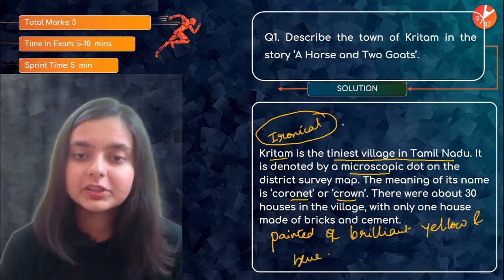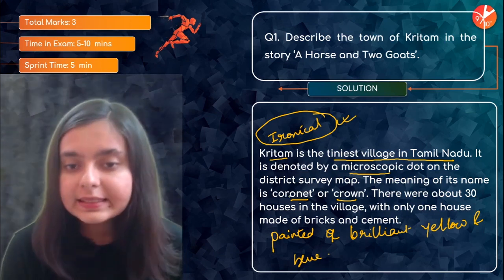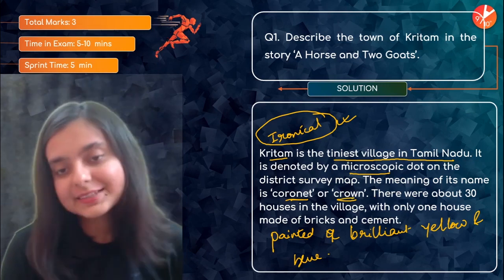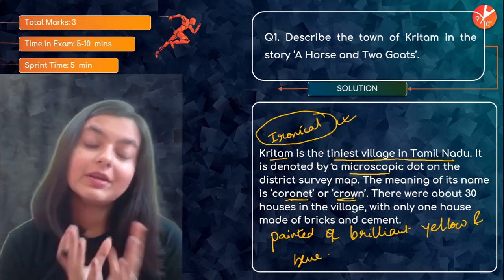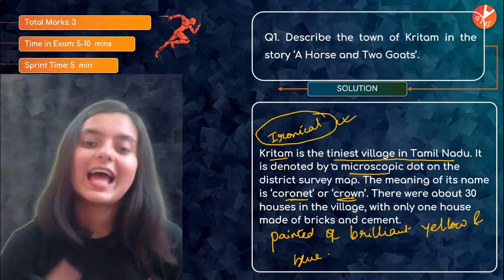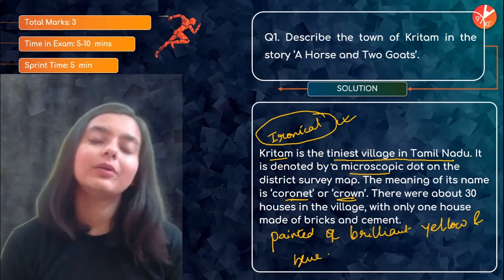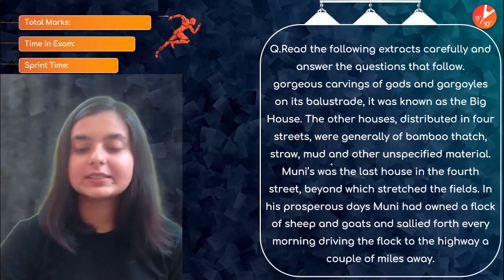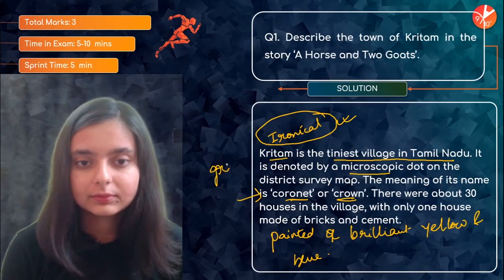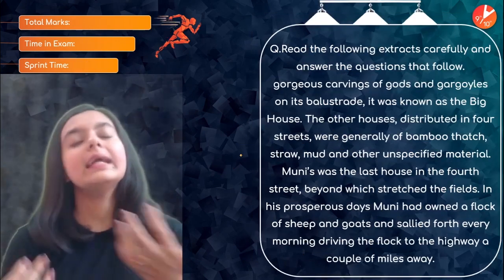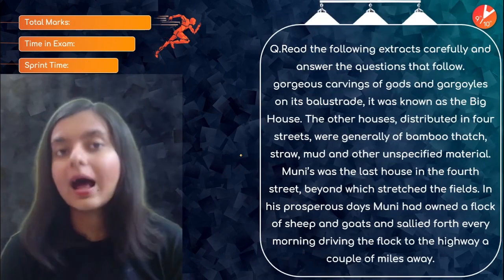You should also mention that the name Krittam means 'coronet' or 'crown over the brow of the subcontinent,' yet despite being the tiniest village, that did not prevent anyone from naming it Krittam. This is something grandiose and makes it very ironical. Mentioning these points will definitely enhance and enrich your answer.